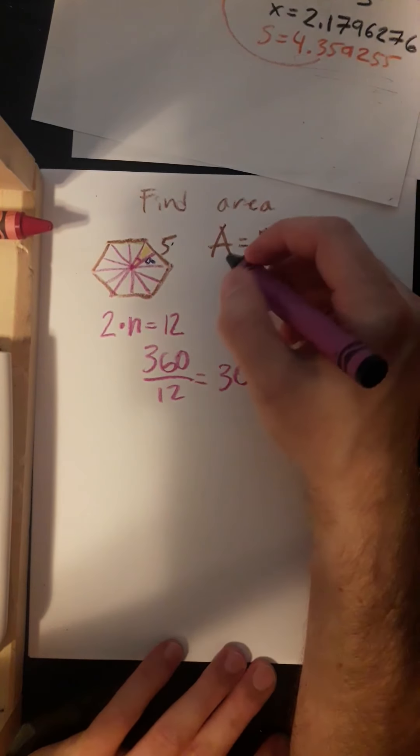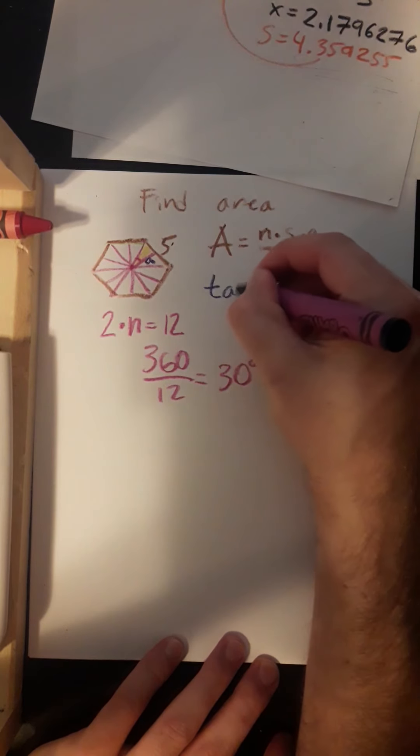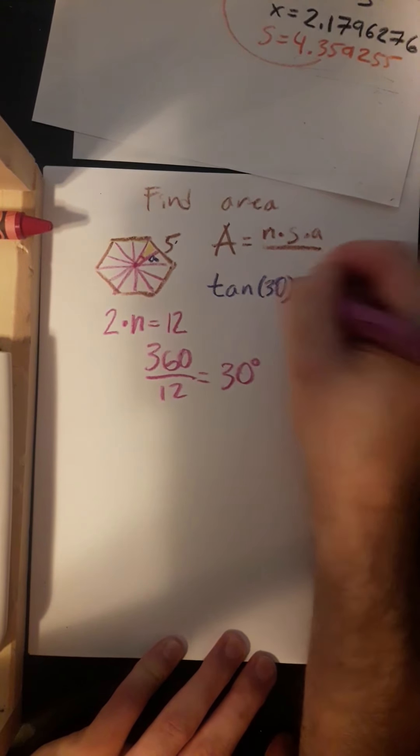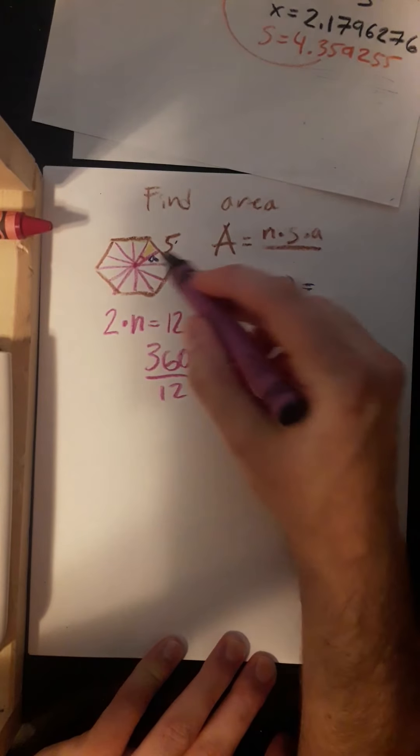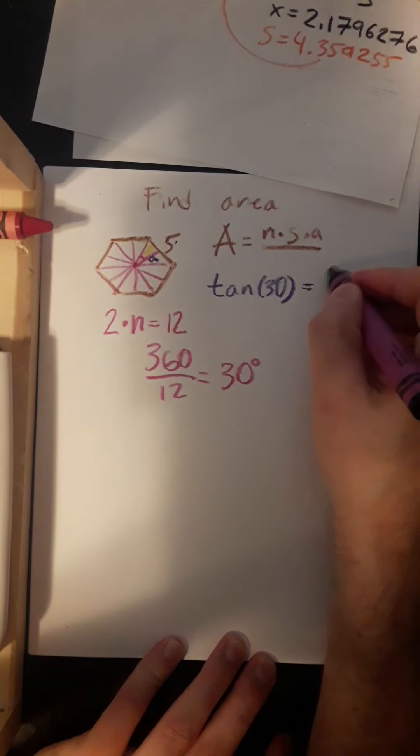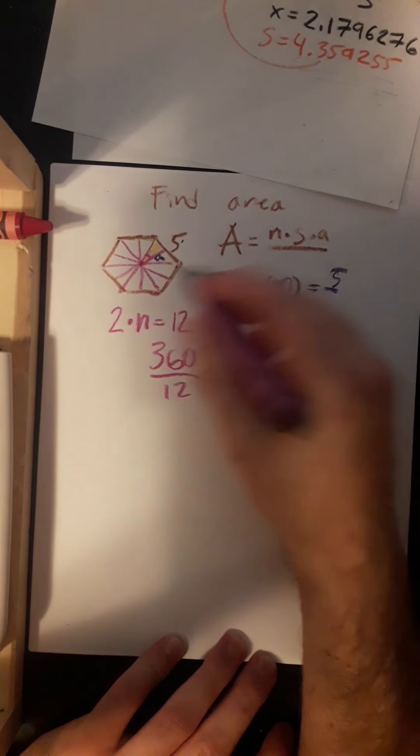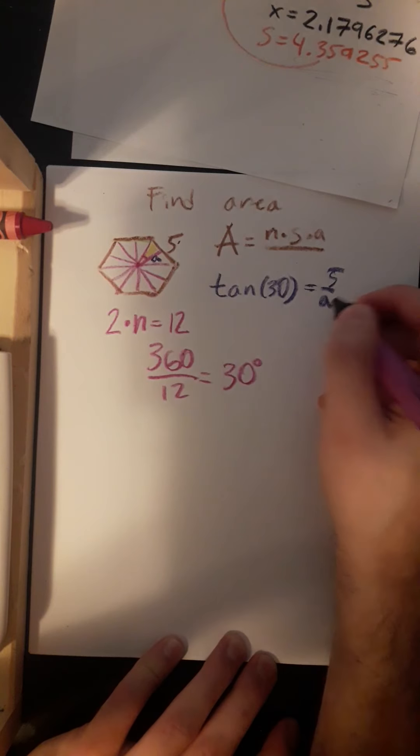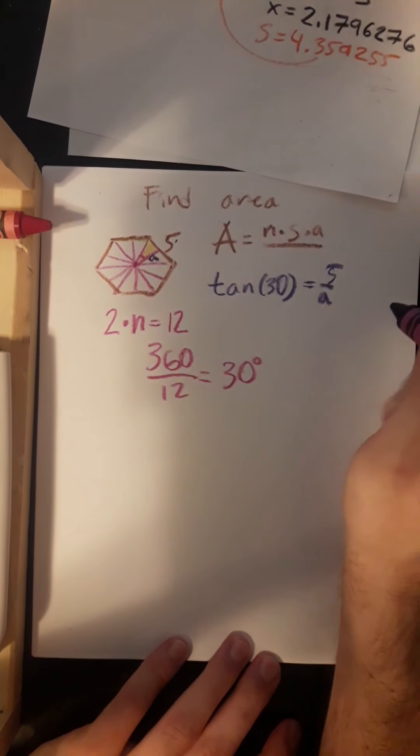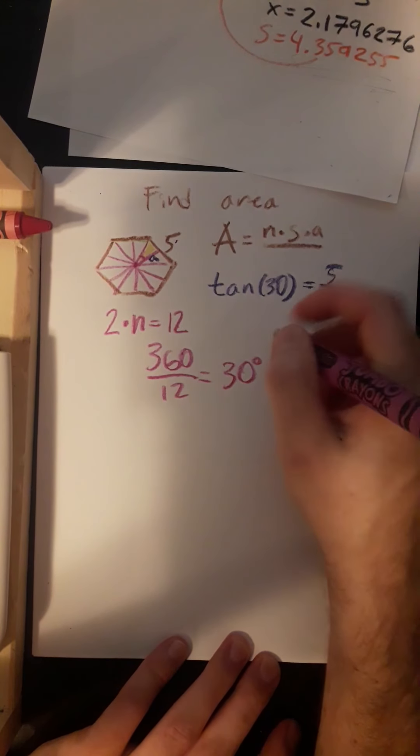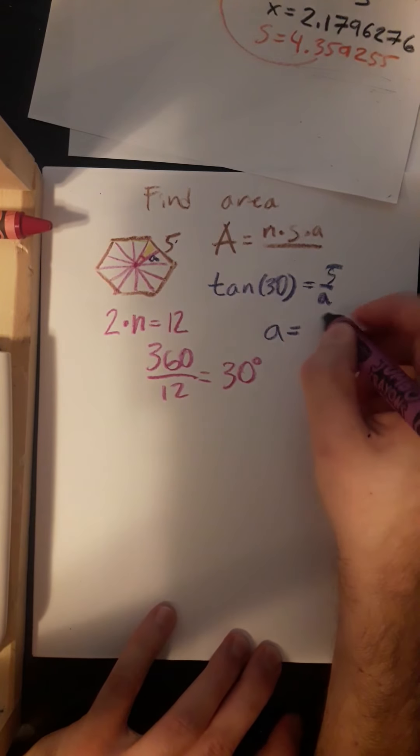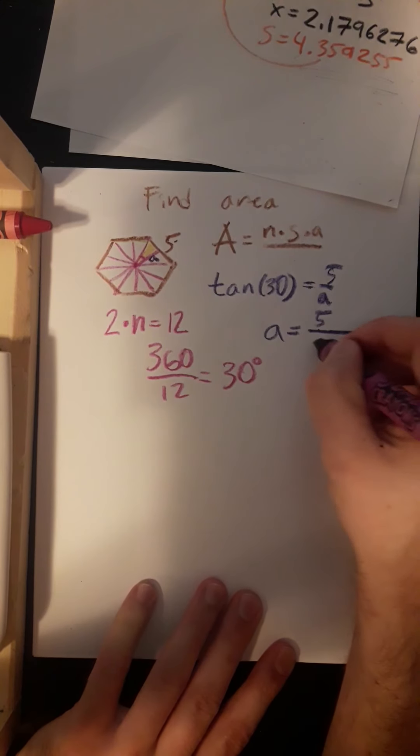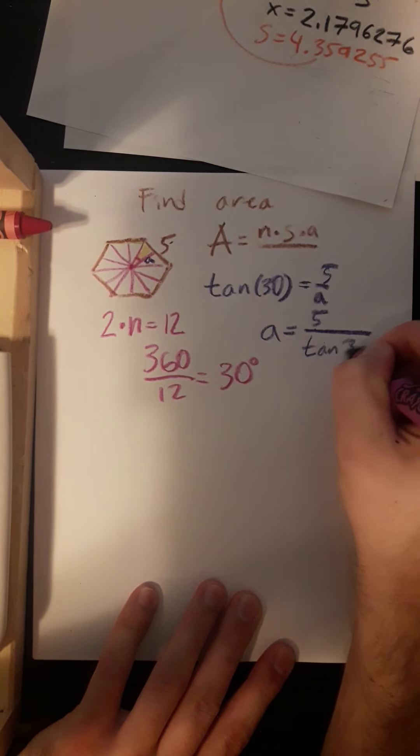Okay, now we're going to use tangent, just like before. So we know that tangent of 30 degrees is equal to, opposite of this angle is 5, over apothem. Opposite over adjacent, or apothem is adjacent. Okay, so we'd cross-multiply, and we'd end up finding that apothem was equal to 5 divided by the tangent of 30.